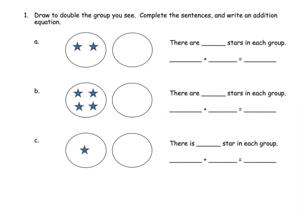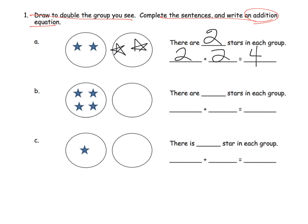Here is where we really think about evens and odds numerically. It says draw to double the group that you see, then complete the sentences and write the addition equation. We have two stars here, so we're going to fill in two more stars. There are two stars in each group — 2 plus 2 equals 4. The idea is that this star has a partner and this star has a partner — everybody has a partner, much like those Numicon pieces.